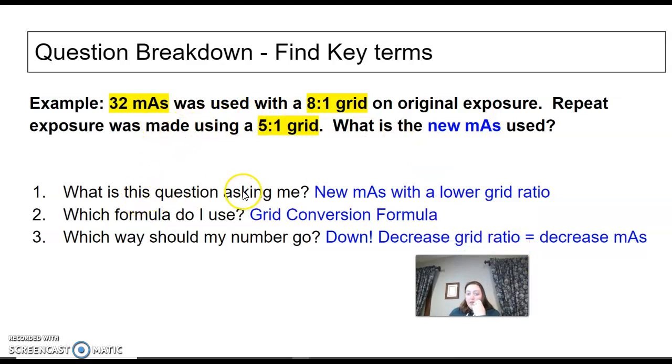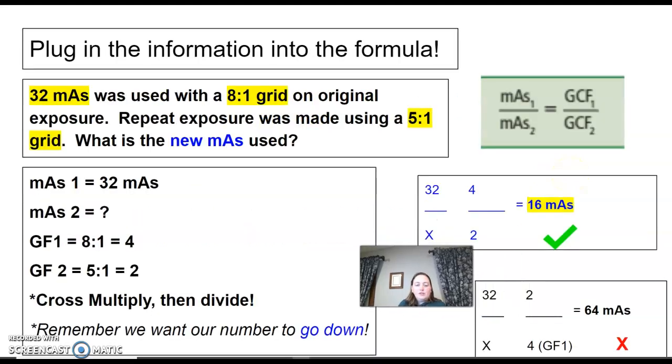Alright, what is this question asking me? Again, it's asking me to figure out a new mAs with a lower grid ratio. Which formula? Grid conversion formula, because that's what we're doing on this video. Which way should my number go? It's got to go down, right? I am using a 5:1 after an 8:1. So 8:1 is higher. So I have to decrease my number. My mAs has to go down.